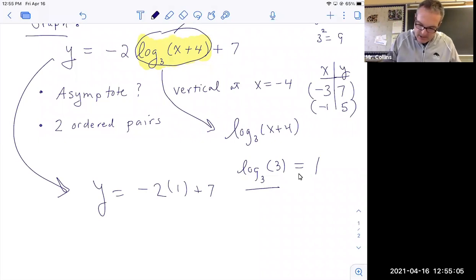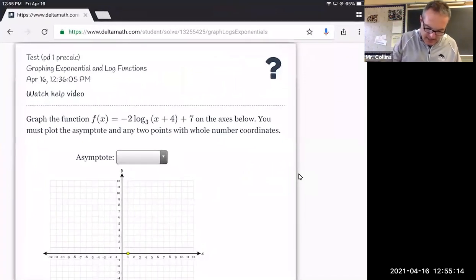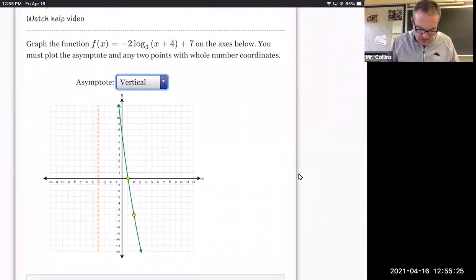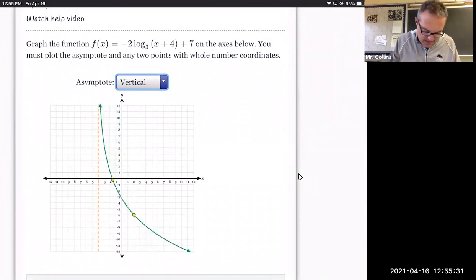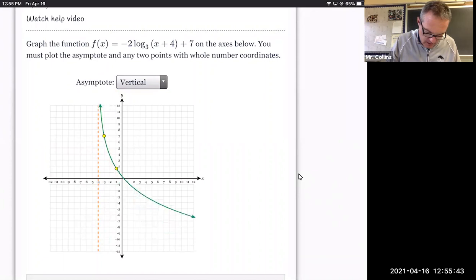All right, so what does that mean? Let's go back over to DeltaMath and see how this is going to work. So if I go to my DeltaMath, first of all they asked me for the asymptote, I said it's a vertical asymptote. And you can see you have this dashed line, I want to bring that over to negative four. Let's bring that over here. And then I need two ordered pairs, we said negative three, seven was one of them. Let's move it over to negative three comma seven. That's right here. And then the other one we said was at negative one, five. So if I get a negative one, I can go up to five. That's there.